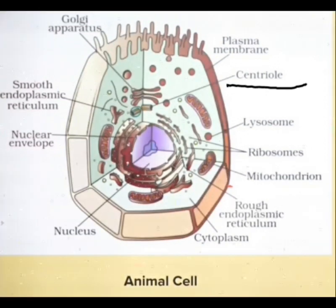Centrioles are gas cylinder-like structures which help in the division of the cell. That is all about the animal cell.